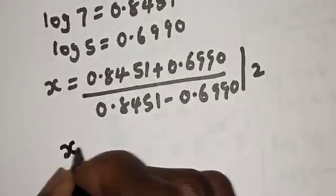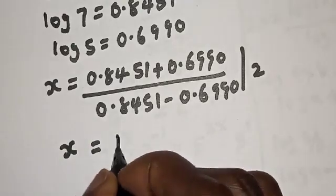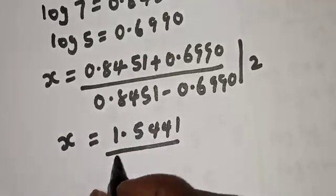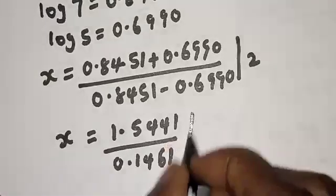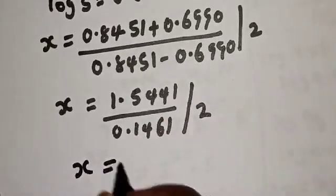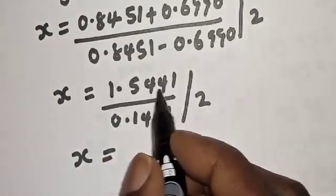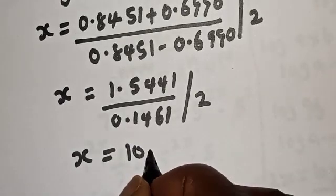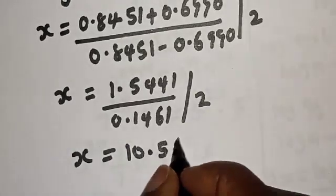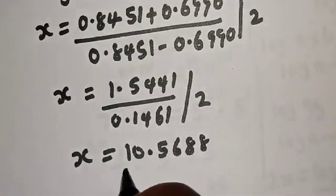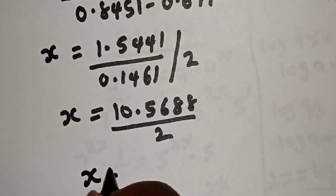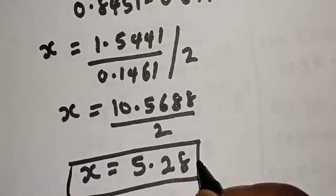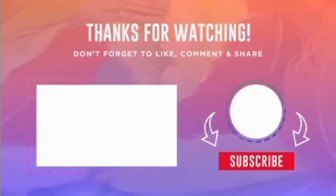s is equal to 1.5441 over 0.1461, which gives 10.5688, then divided by 2. Therefore s is equal to 5.28. This is the final answer. If you enjoyed the class, please don't forget to like, share, comment, and subscribe. Thank you.